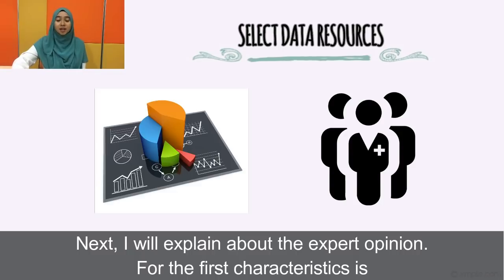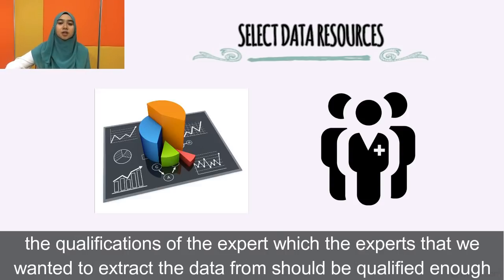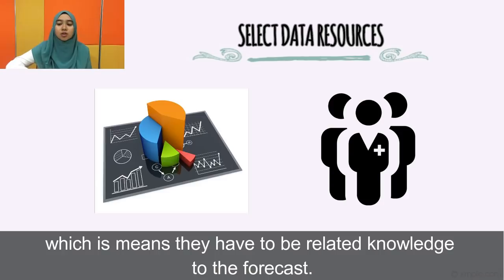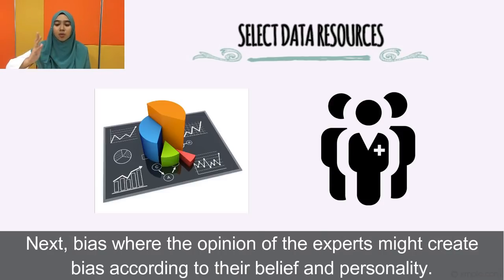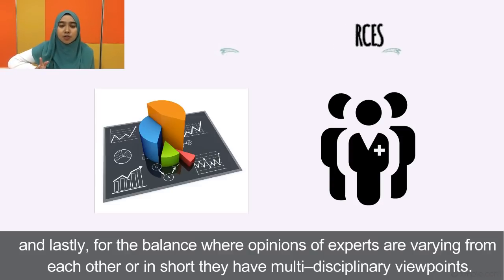For expert opinion, the characteristics are: first, the qualification of the expert — the expert from whom we extract data should be qualified and have knowledge related to the forecast. Next, bias — the expert's opinion might create bias according to their beliefs and personality. Lastly, balance — opinions of experts vary from each other, meaning they bring multidisciplinary viewpoints.